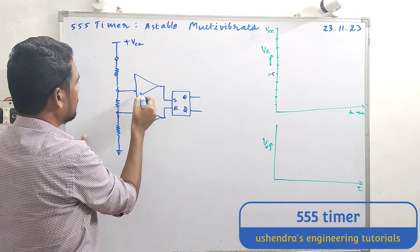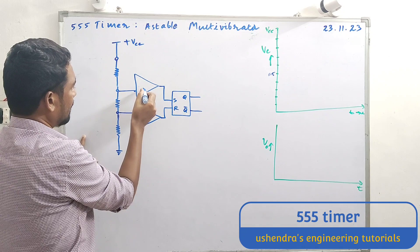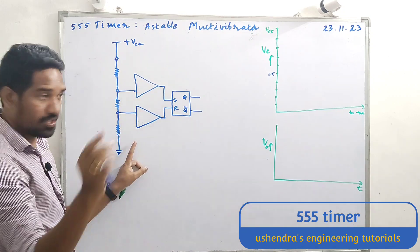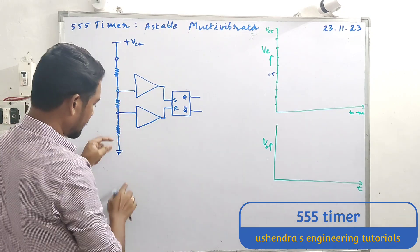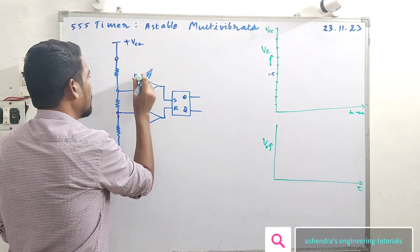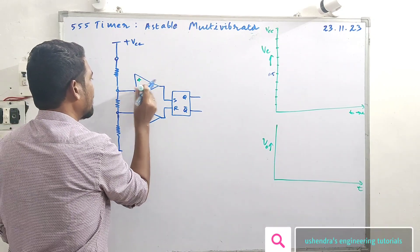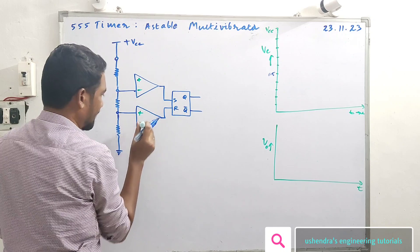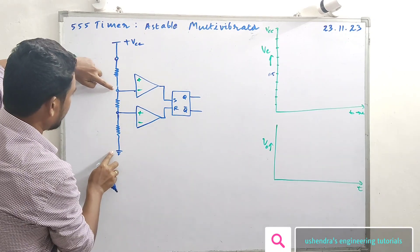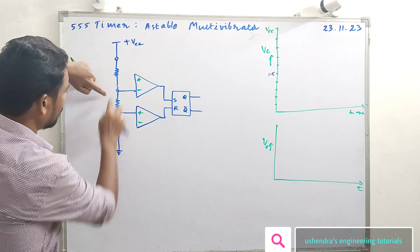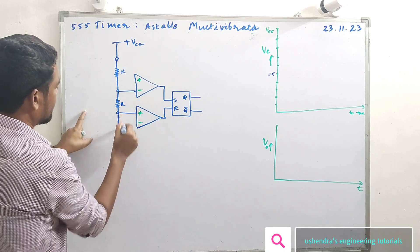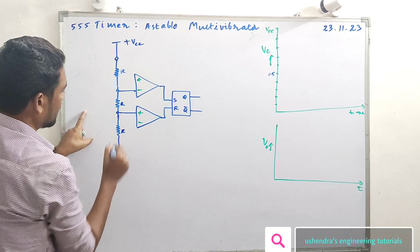The operational amplifier has two inputs — plus and minus. So here, plus and minus. R can be used. And straight away, there is a voltage divider. Guys, this is R, R, R — same values. R1, R2, R3.